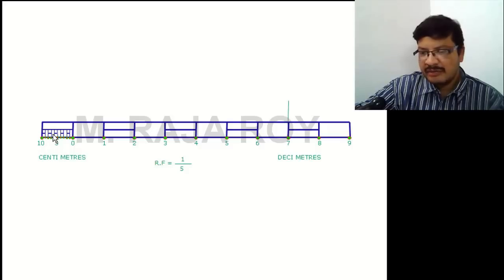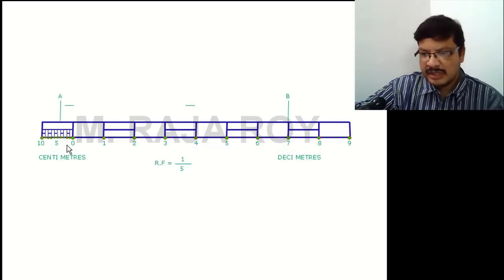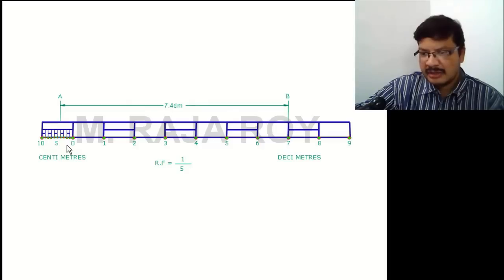Now show the given length on the scale. 7.4 decimeters means 7 decimeters and 4 centimeters. Take 7 decimeters on the decimeters side, and take 4 centimeters on the centimeter scale side. This total length will be 7.4 decimeters.